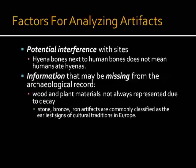When analyzing artifacts, you have to look at the potential interference with sites. For example, hyena bones next to human bones does not mean that the humans ate the hyenas. There could be many other reasons why those hyena bones were located in close proximity to human bones.